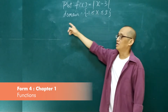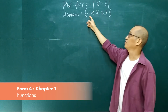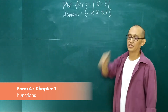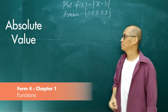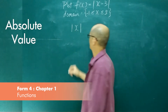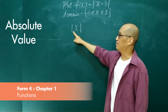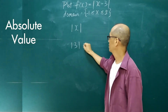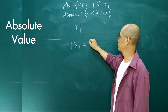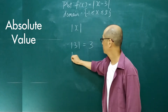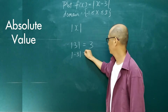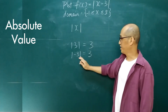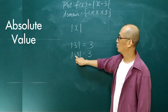Plot this function where the domain is negative 1, 2, 5. This symbol is the symbol for absolute value. The absolute value of x — if x is 3, then the absolute value of 3 is 3. If x is negative 3, the absolute value of negative 3 is also 3. What we do is, we do away with the negative sign.